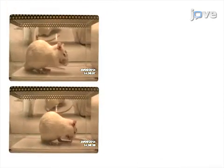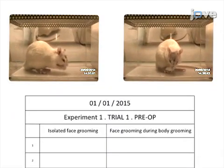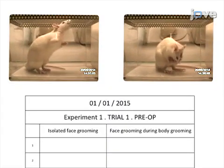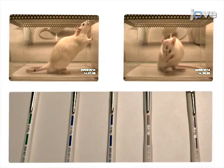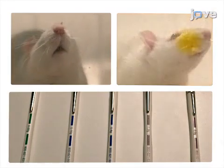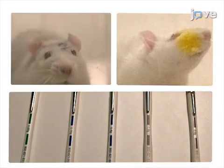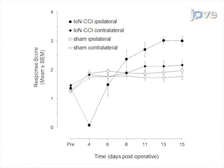Next, the animal is placed in an observation cage for 10 minutes and spontaneous neuropathic pain is assessed by measuring the amount of isolated face grooming. Additionally, mechanical allodynia is measured by stimulating the rat's infraorbital nerve territory with a graded series of von Frey hair filaments. Ultimately, changes in grooming behavior and response in the ipsilateral infraorbital nerve territory are used to investigate the treatment of trigeminal neuropathic pain.